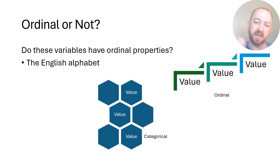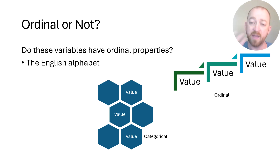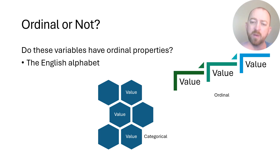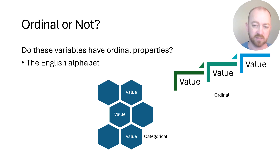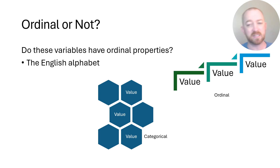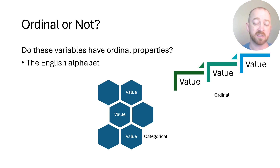Is the English alphabet inherently categorical or ordinal? I think the best answer here is that it is clearly ordinal. Of course the letter B is different from the letter C, but we also know that B does come before C. We use the alphabetical system all the time, and it does not change from one English system to another. A always comes before B, C always comes before X, and so on. So the alphabetical system in the English language is ordinal — it does matter the order in which the letters come.